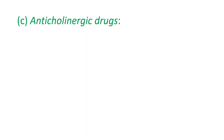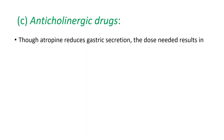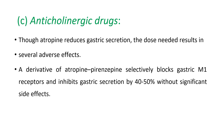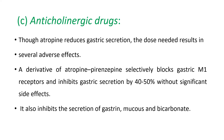The next class is anticholinergic drugs. Atropine reduces gastric secretion, but the dose needed results in severe adverse effects. A derivative of atropine, pirenzepine, selectively blocks gastric M1 receptors and inhibits gastric secretion by 40–50% without significant side effects. Since acetylcholine binding with the M2 receptor drives gastric acid secretion, anticholinergic drugs inhibit gastric secretion. They also inhibit the secretion of gastrin, mucus, and bicarbonate. Pirenzepine is used as adjunct therapy.